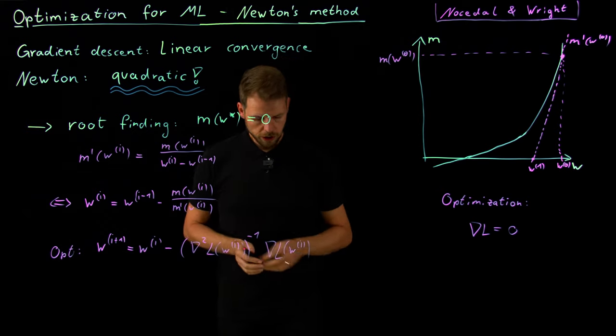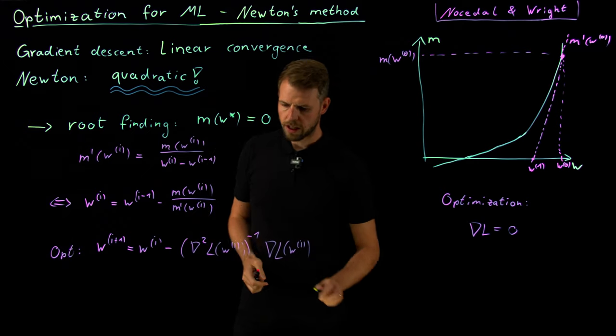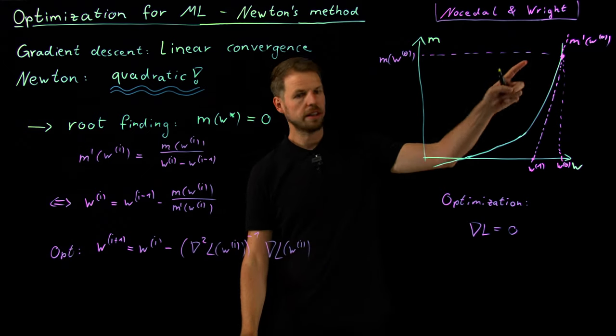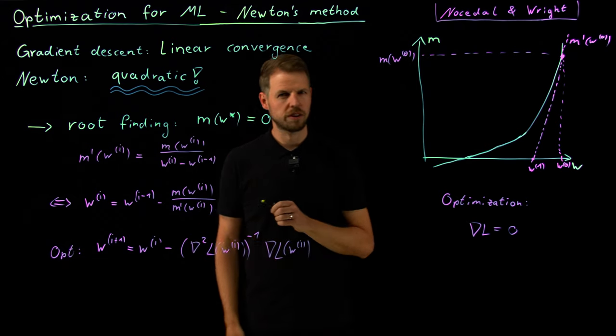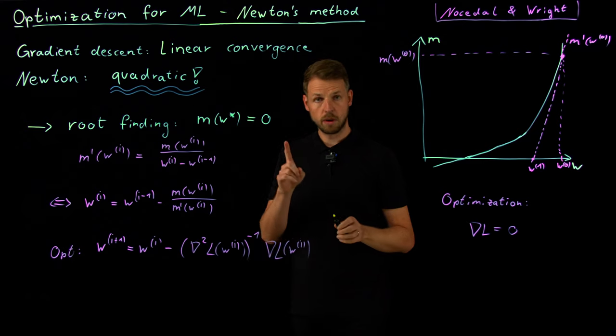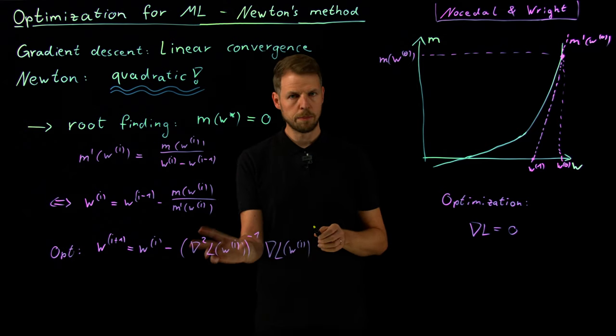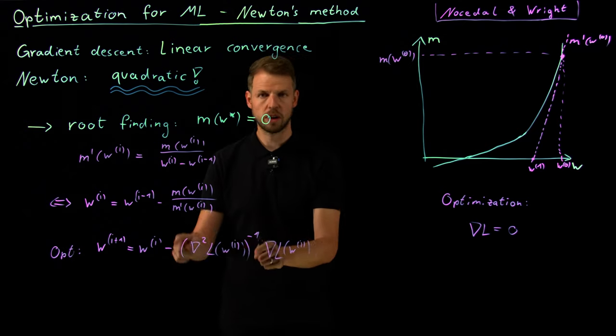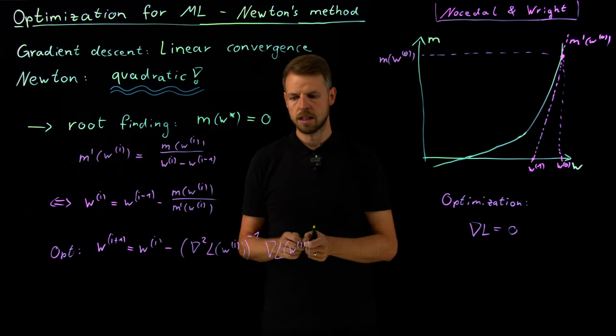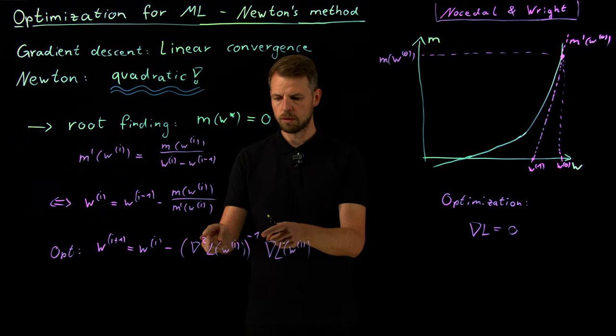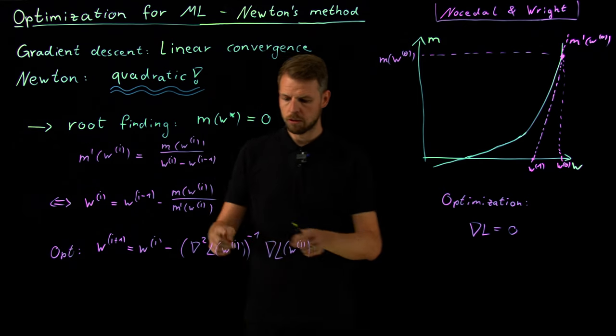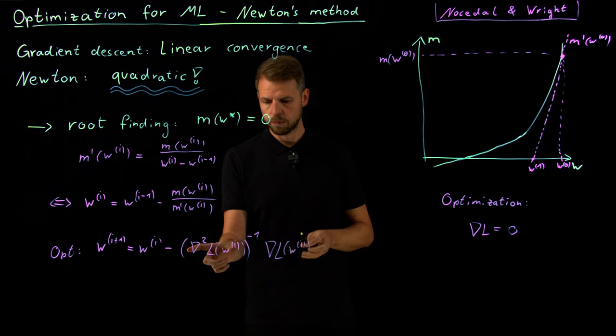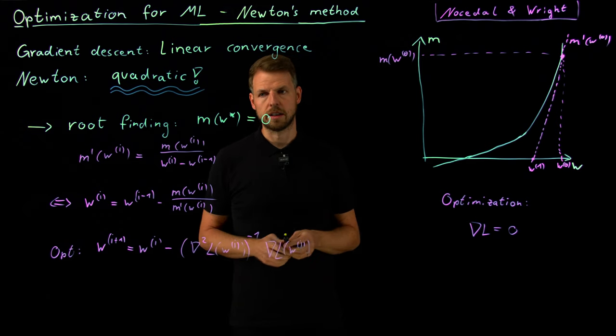And so if we talk about this in terms of a scalar problem like we had here, then this would be a step length in terms of the second derivative. In 1D, it's very easy. This is an adaptive step size. This is somewhat linked to the curvature of the problem. So if you have a strongly curved problem, a high curvature, one divided by this gives you small step lengths. Small curvature will give you a long step length.